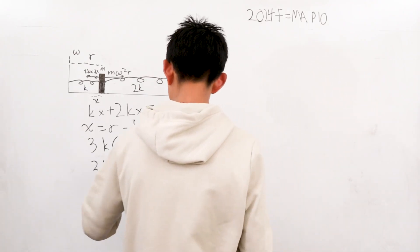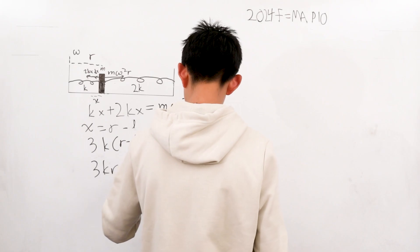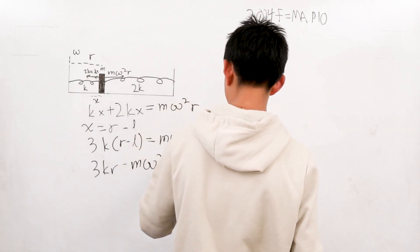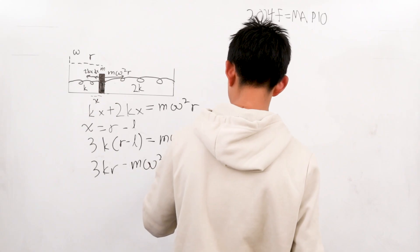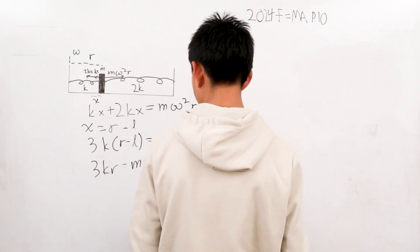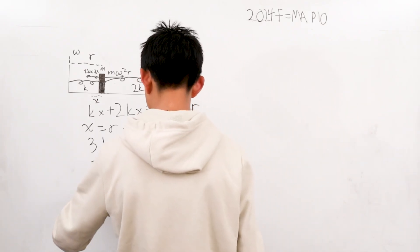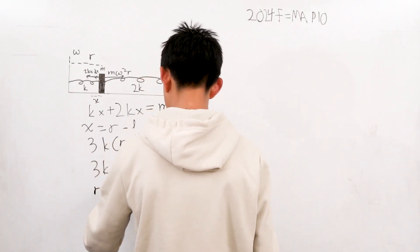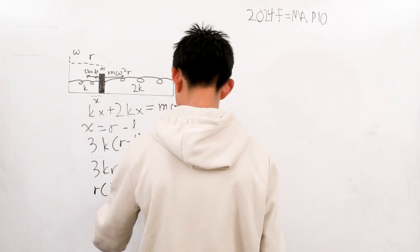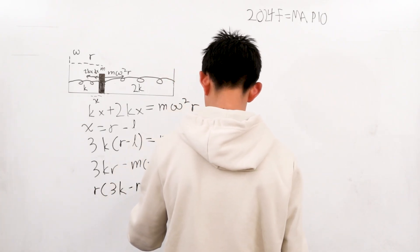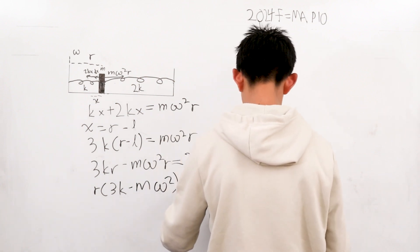So if we factor out an R, this becomes R times 3K minus M omega squared is equal to 3KL.